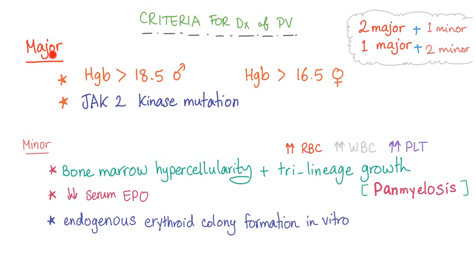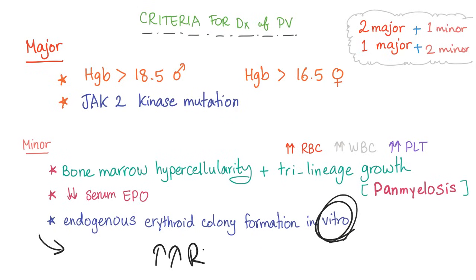Criteria for diagnosis of polycythemia vera — major and minor. Major criteria: hemoglobin must be high, and JAK2 kinase mutation present. Minor criteria: bone marrow hypercellularity with tri-lineage growth (panmyelosis) — increase in red blood cell, white blood cell, and platelet synthesis; decreased serum EPO as negative feedback; and endogenous erythroid colony formation in vitro. To diagnose PV, you need either two major criteria plus one minor, or one major plus two minor.